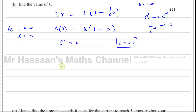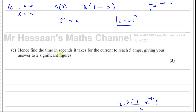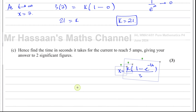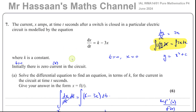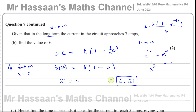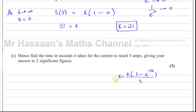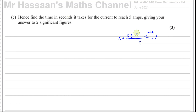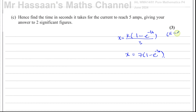Now for part C: find the time in seconds for the current to reach 5 amps, giving the answer to two significant figures. With k equals 21, we have x equals 21/3 times (1 minus e^(−3t)), which is x equals 7 times (1 minus e^(−3t)). That's our equation with the known value of k.